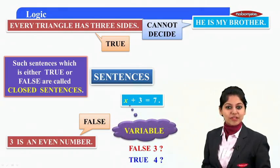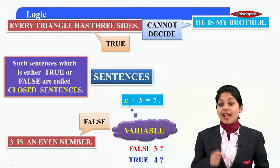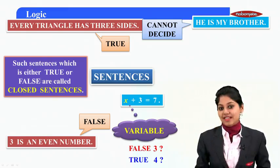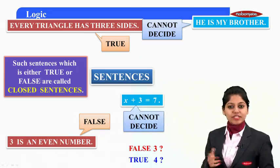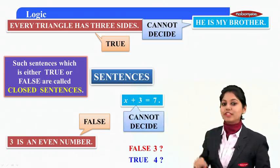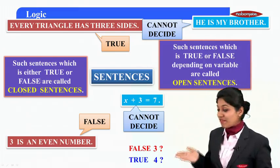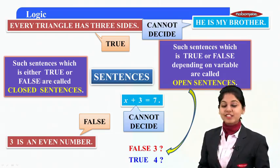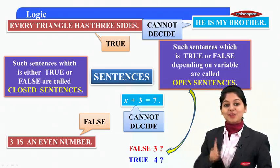So you cannot determine the truth value, because x is a variable — x changes its value, and accordingly the sentence can be true or false. What is similar between these two sentences? They are both true or false depending on the variable. Such sentences are called open sentences — sentences whose truth value depends on different values of 'x' or 'he' are called open sentences.